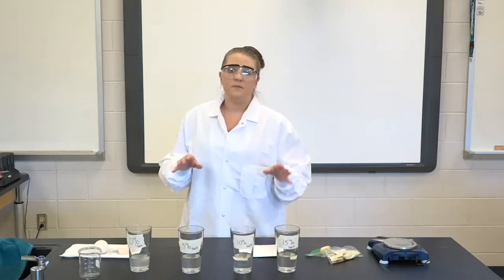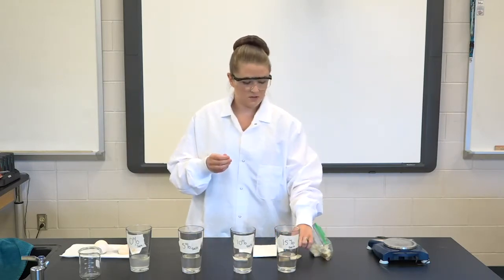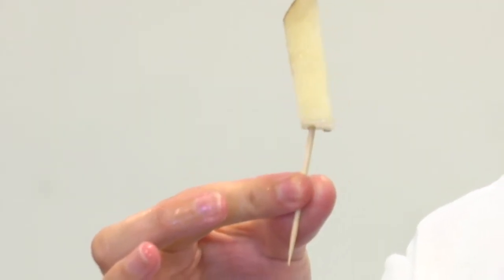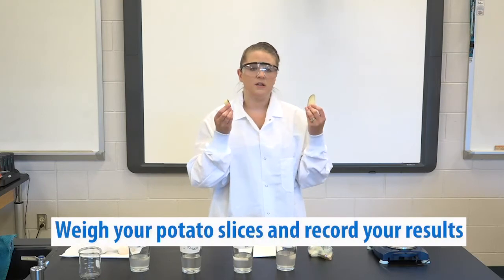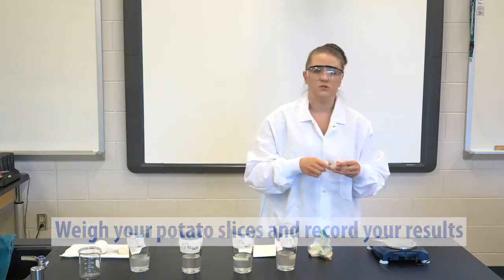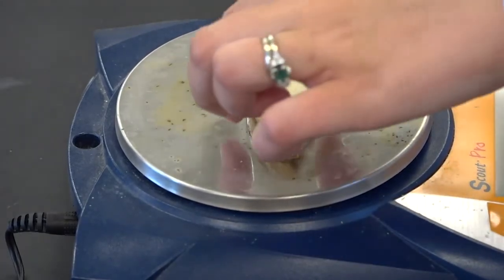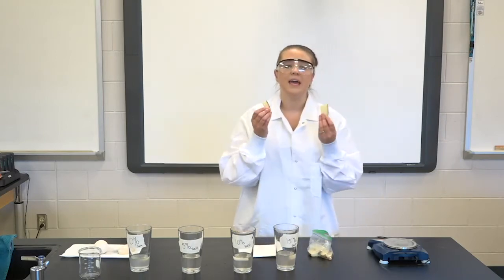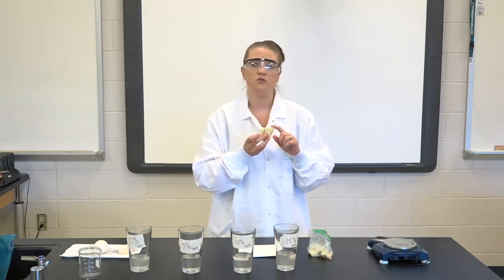We're going to set this up and come back in 30 minutes to see what's happened. Use a toothpick to mark one of the strips so you can tell them apart, and you're going to put two slices in each cup. Before you place the slices in, we need to take the initial mass of each potato slice and record it on our data sheet. You can use a food scale at home. Place each slice, take the mass in grams, and then record it. For these two slices, they each weigh 8.5 grams. Do that for each slice and make sure you record it so you have something to compare to.